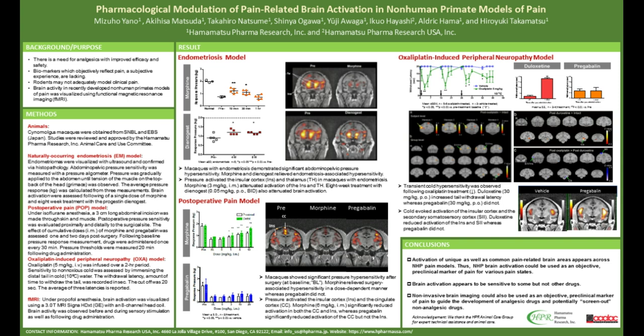Finally, we also looked at the oxaliplatin-induced peripheral neuropathy model. In this model, we induced cold allodynia by injecting oxaliplatin into the animal. We assessed pain-associated behavior with the tail immersion test, where the tail of the animal was immersed into cold water and the withdrawal latency to the avoidance response was recorded as a measurement for pain. When animals were injected with oxaliplatin, the withdrawal latency was reduced, indicating the animal is experiencing pain. This behavior was reversed with duloxetine treatment, but not with pregabalin treatment.